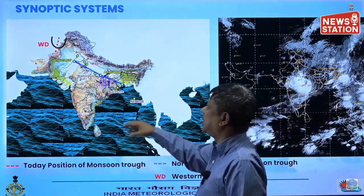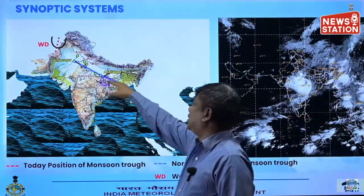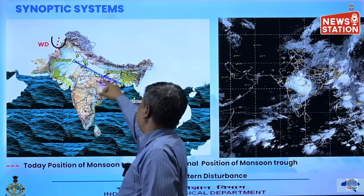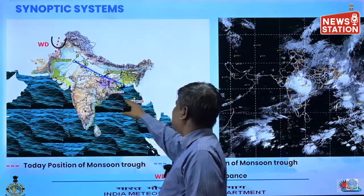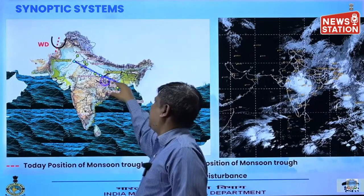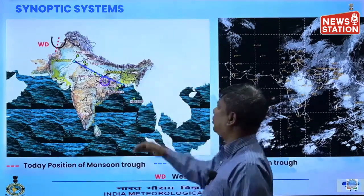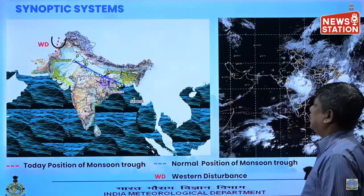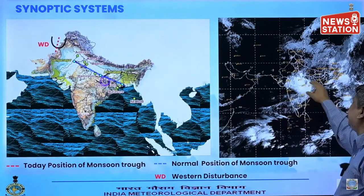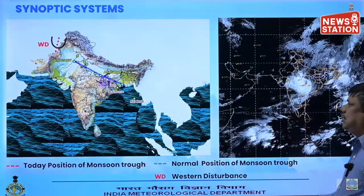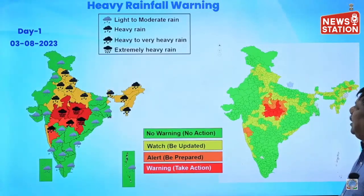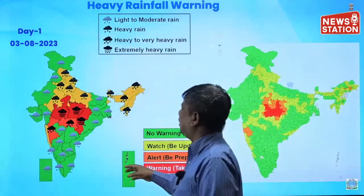Looking at today's synoptic situation, the western disturbance is still present. The trough extends from Amritsar–Karnal–Meerut–Lava through the depression center up to the northeast Bay of Bengal, and it is close to or south of the normal position in the east. The satellite imagery shows a lot of cloudiness over Madhya Pradesh due to the system, which is producing heavy rain.